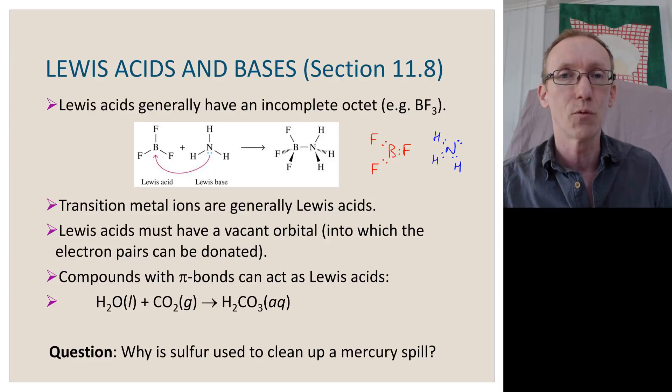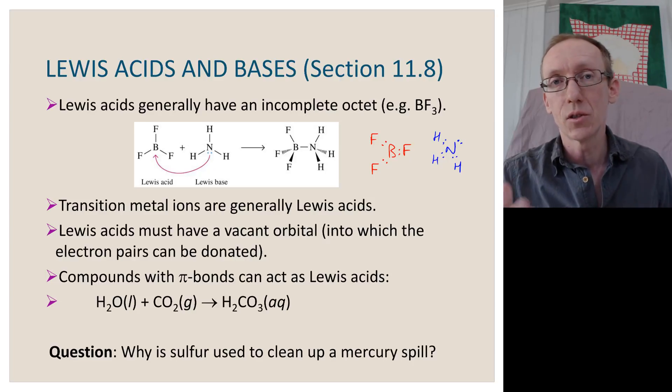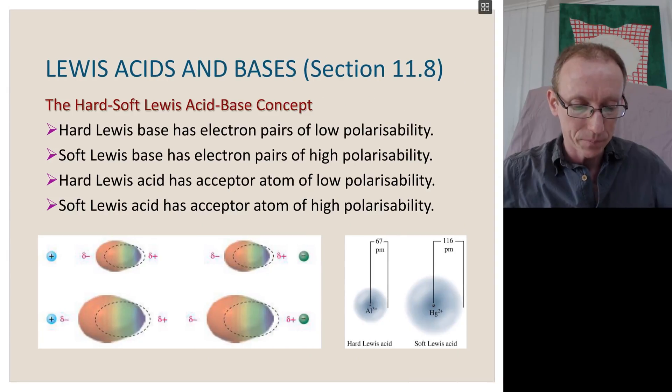But because mercury is one of these rare metals that has a significant vapor pressure and mercury is quite toxic, we don't tend to use it as much as we used to. But in old chemistry labs, if mercury in a thermometer, if the thermometer broke, then the mercury that was spilled would be cleaned up by putting elemental sulfur onto it. And that's because sulfur has a really high affinity for mercury. And the reason for that is that mercury is a very soft Lewis acid, and sulfur is a very soft Lewis base.